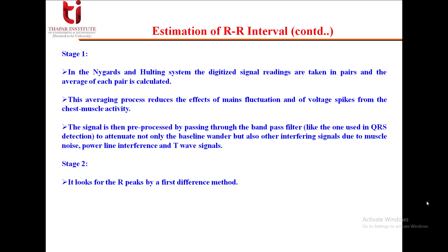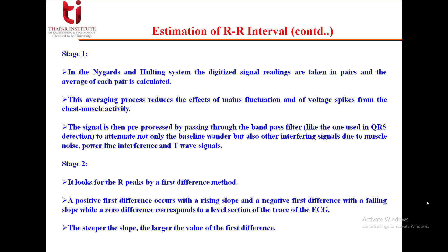Stage 2 looks for the R peaks. In ECG cycle, R is defined as a peak, so we look for the R peaks by a first difference method. A positive first difference occurs with a rising slope and a negative first difference with a falling slope, while a zero difference indicates a level section. The steeper the slope, the larger will be the value of first difference.